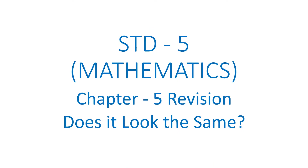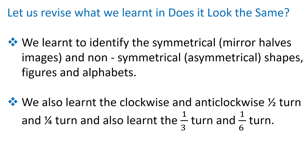Hello children, today let us do the revision of chapter number 5. We learned to identify the symmetrical, that is mirror halves images, and non-symmetrical, that is asymmetrical shapes, figures and alphabets. We also learned the clockwise and anti-clockwise half turn and one-fourth turn, and also learned the one-third turn and one-sixth turn.